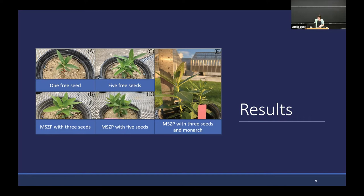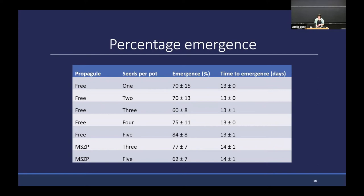Here are some percentage emergence data, presented as mean plus or minus standard error on a per-seed basis. So in a treatment where three seeds were planted, a 67% emergence rate would indicate that on average two out of three seedlings emerged. There's no significant effect of treatment — neither the free seed versus MSVP comparison nor the seeding density affected percentage emergence. Likewise, there's no effect on time to emergence; it may be numerically delayed a bit with the MSVP, but it's not statistically significant.